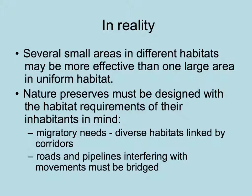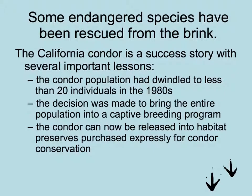If species migrate, diverse habitats need to be linked by corridors — like birds that migrate up and down mountains as trees come into fruit. Areas spanned by roads and pipelines — things that interfere with migration — should be bridged, perhaps lifted above so wildlife can move underneath them.